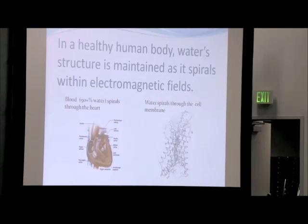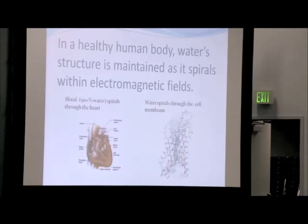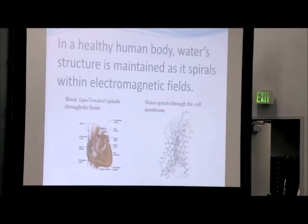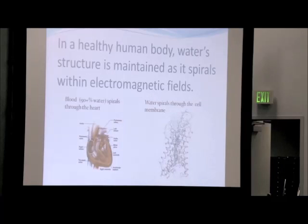In the healthy human body, water's structure is much easier to maintain because we are electromagnetic beings — there are tiny pulses of electromagnetic currents going through this living organism all the time. We know that the blood spirals through the heart and through our veins and arteries. This graphic on the right is a molecular graphic of the protein arrangement — the proteins themselves are spirals creating a channel, the aqua color in the center. This is a diagram of the aquaporin, the channel that takes water into every cell. And it spirals.